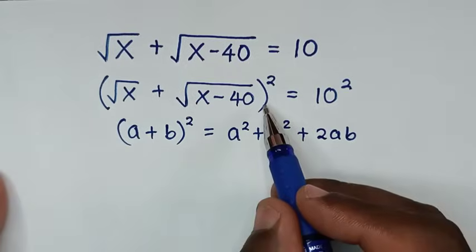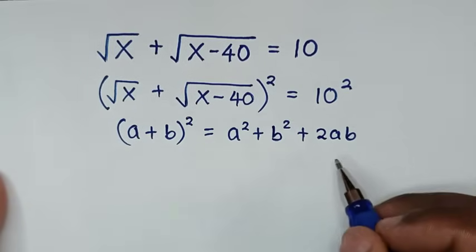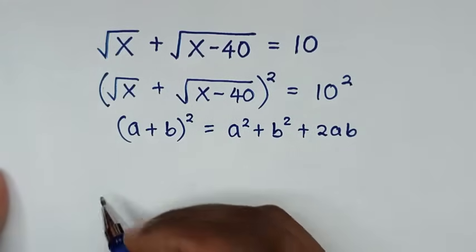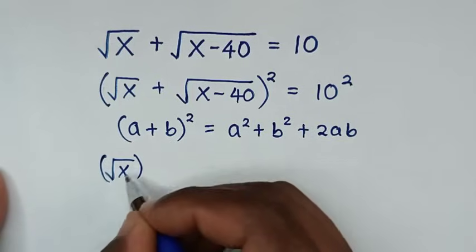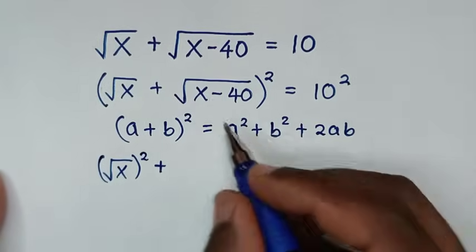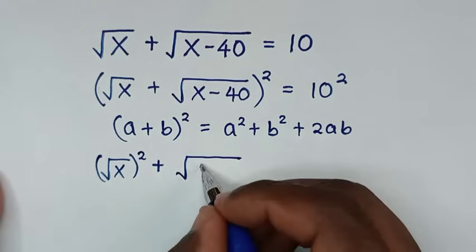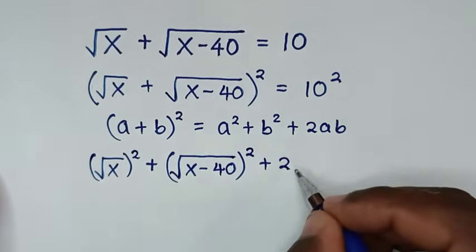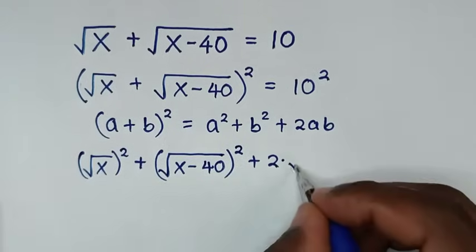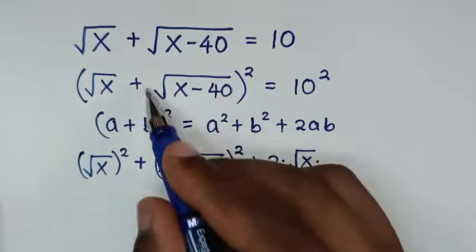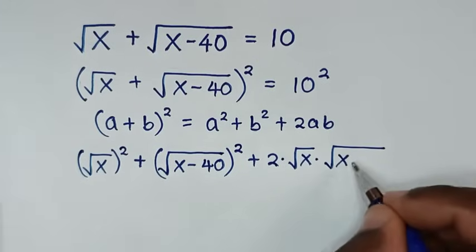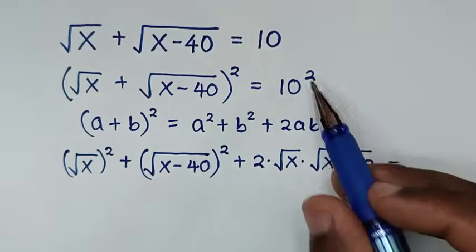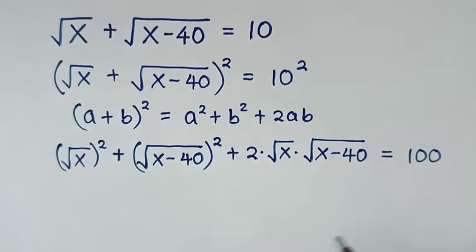We apply this form to expand. a squared gives us square root of x, bracket squared, then plus b squared which is square root of x minus 40, bracket squared, then plus 2 times a which is square root of x, times b which is square root of x minus 40, and this equals 10 squared which is 100.